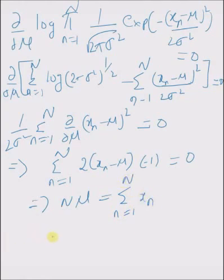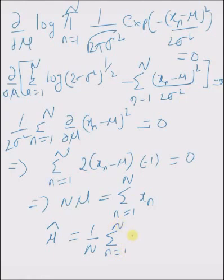Hence, the maximum likelihood estimate of the mean of N realizations of x is given by its arithmetic average — the summation from n equal to 1 to N of x n divided by the number of values.